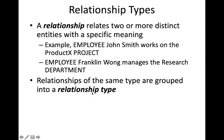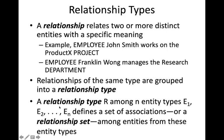Just as we have entity and entity type, we have relationship and relationship type. There is also the concept of a relationship set. A relationship type R among N entity types E1, E2, etc. defines a set of associations — called a relationship set — among entities from those entity types. It is the extension of the relationship type, specifying all relationships between all the entities, similar to how entity set is the extension of entity type.